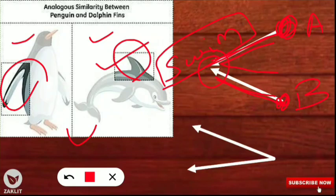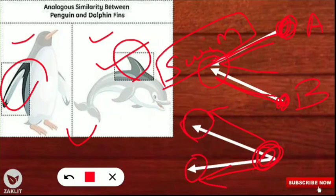In contrast, there is also divergent evolution. In divergent evolution, there is one common ancestor, but the organisms diverge and perform different functions with the same organ. That organ is called a homologous organ — common ancestor, but different function. I hope you have noted down and understood the concepts of convergent evolution and divergent evolution.